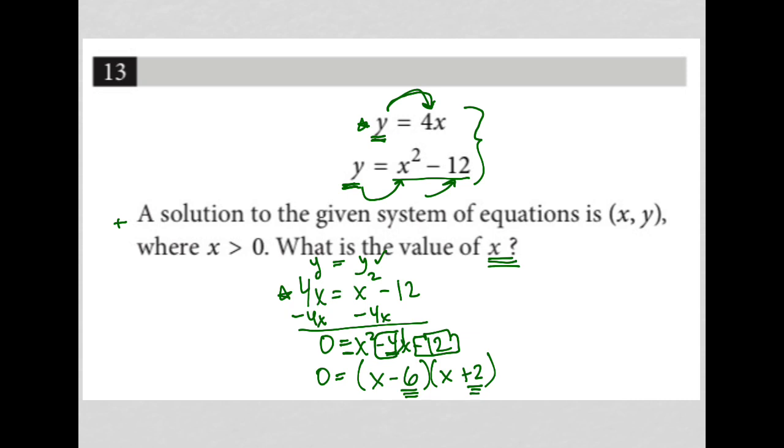So here we have x minus 6 times x plus 2 equals 0, which means I can set each of these individually equal to 0. So x minus 6 equals 0. I can set x plus 2 equal to 0.